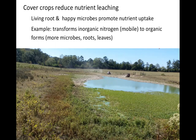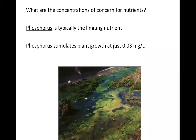If there is a nutrient in the water attached to soil particles and it's traveling to a surface body like a pond, lake, or stream, we can slow that down and minimize the amount of nutrients that can contribute to eutrophication — the rapid growth of plants and algae in water bodies — which can be really detrimental to water quality.